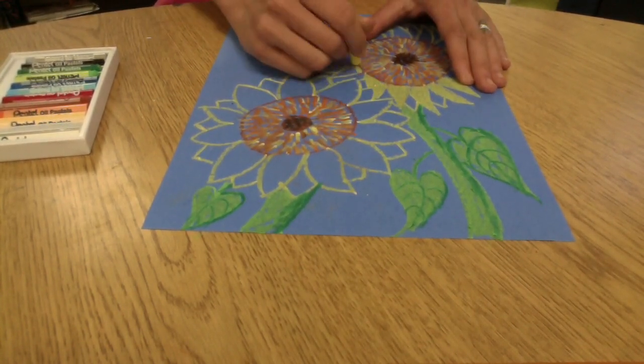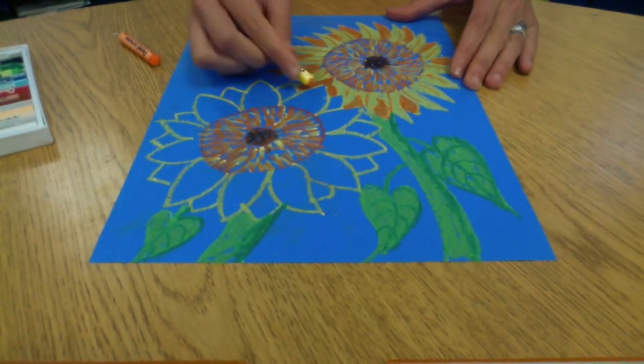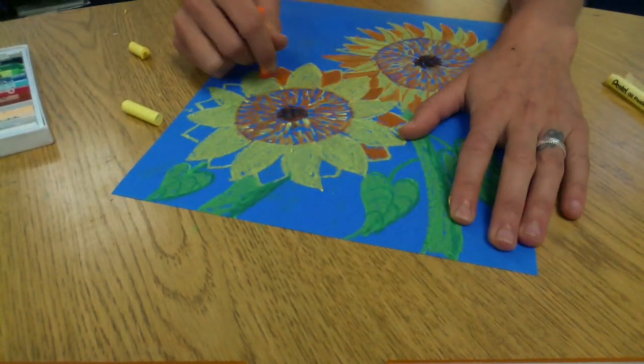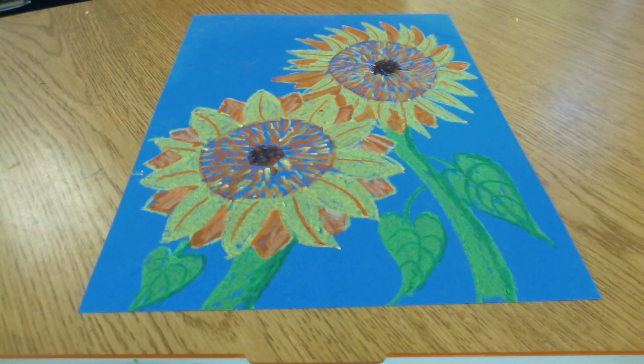So now I'm starting to color in my petals. Remember, you can use different colors, so I'm using some yellows and some oranges, maybe a little bit of peach in the back, and you can do colors on top of each other and blend them.